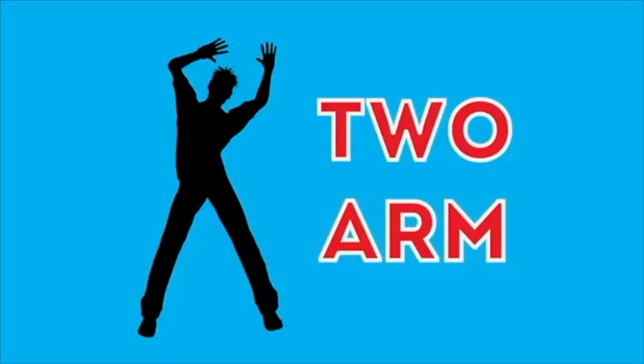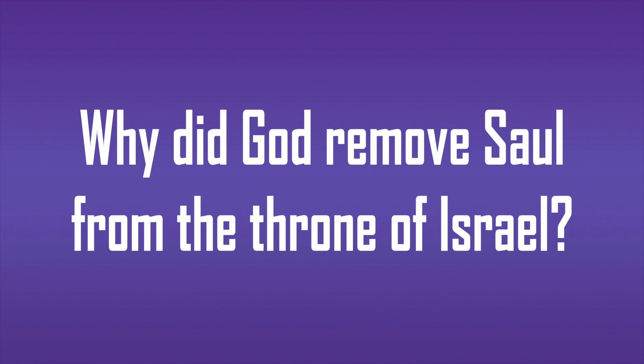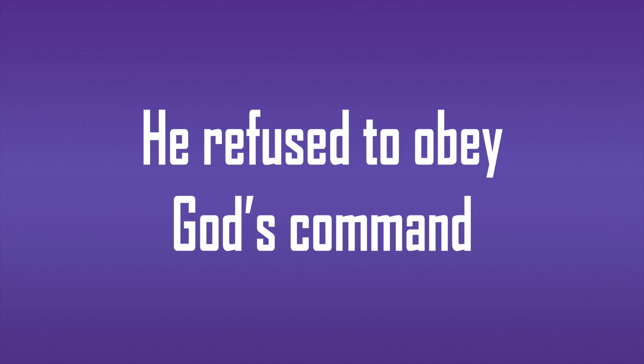Pick your pose. If you pick one arm, then you're the winner. So let's see if you can answer this JBQ question: Why did God remove Saul from the throne of Israel? If you answered he refused to obey God's command, then you're correct.